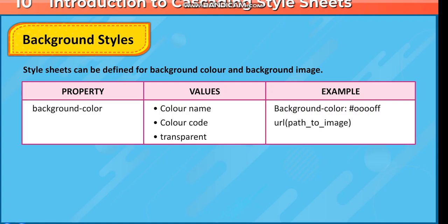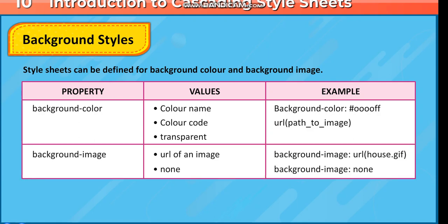For example, background-color: #0000ff sets the background color using a hex color code. Background-image accepts a URL of an image or none. For instance, background-image: url(house.gif); or background-image: none.